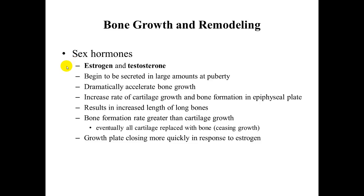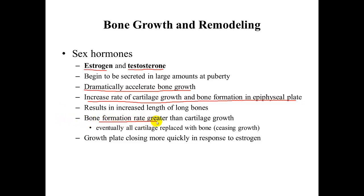Sex hormones — estrogen (the female sex hormone) and testosterone (predominantly the male sex hormone) — begin to be secreted in large amounts at puberty and dramatically accelerate bone growth by increasing the rate of cartilage growth in the epiphyseal plate. This cartilage becomes ossified, increasing bone formation and causing increased length of long bones. Over time, bone formation at these plates is greater than cartilage growth, eventually causing all cartilage to be replaced with bone, ceasing growth — typically in early adulthood after age 18. The growth plate closes more quickly in response to estrogen, which is why females are typically done growing faster than males.